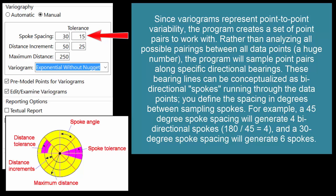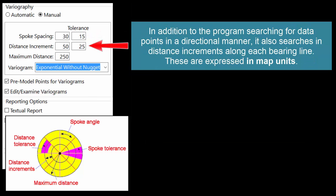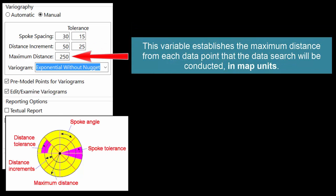These bearing lines can be conceptualized as bi-directional spokes running through the data points. You define the spacing in degrees between sampling spokes — for example, a 45-degree spoke spacing will generate four directional spokes, and a 30-degree spoke spacing will generate six spokes. In addition to searching for data points in a directional manner, the program also searches in distance increments along each bearing line, expressed in map units. This variable establishes the maximum distance from each data point that the data search will be conducted.